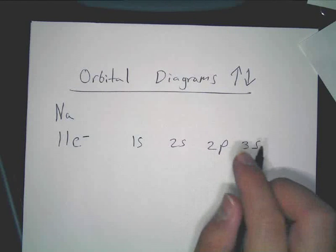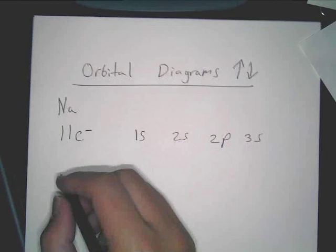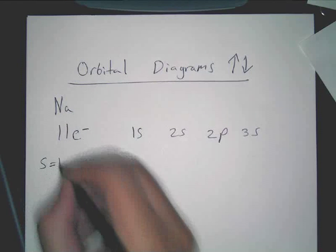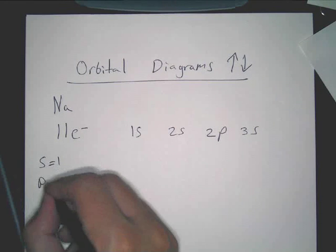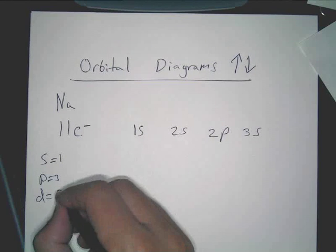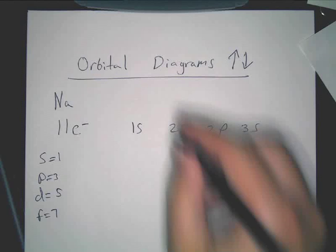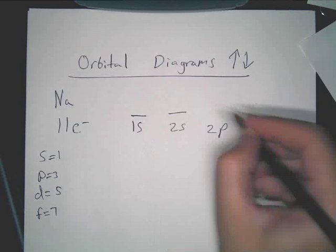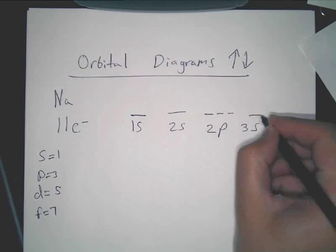Now, something that you probably want to remember, if you don't already, is that if you have S, that's one orbital, P is three orbitals, D is five, and then F is seven. Congratulations. Okay. So we have 1S, we have 2S, we have 2P, then we have 3S.